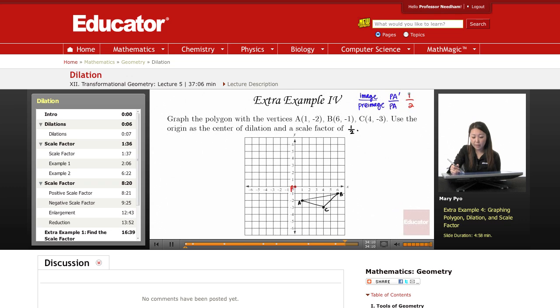That means since the scale factor is 1 half, just smaller than 1, it's going to be a reduction. Pre-image, the original, is larger than the new image. So the new image is smaller. That means our new image is going to be smaller than this.